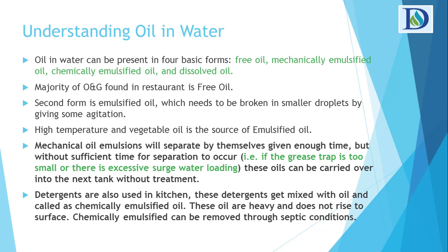Emulsified oil first has to be given some aeration and agitation so that its molecules are broken into smaller particles. Then they can float to the surface and be removed. High-temperature vegetable oil is a common source of emulsified oil, and it is a little more difficult to remove than free oil.